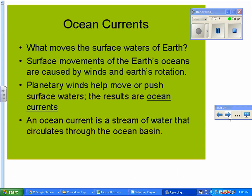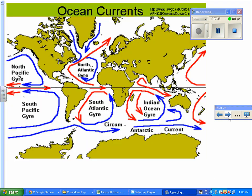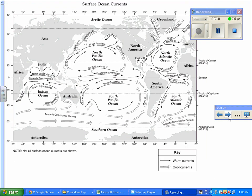Ocean currents. That's pretty self-explanatory. Surface movements of some of the earth's oceans are caused by winds and earth's rotation. Planetary winds help move or push surface waters. An ocean current is a stream of water that circulates through the ocean basin.